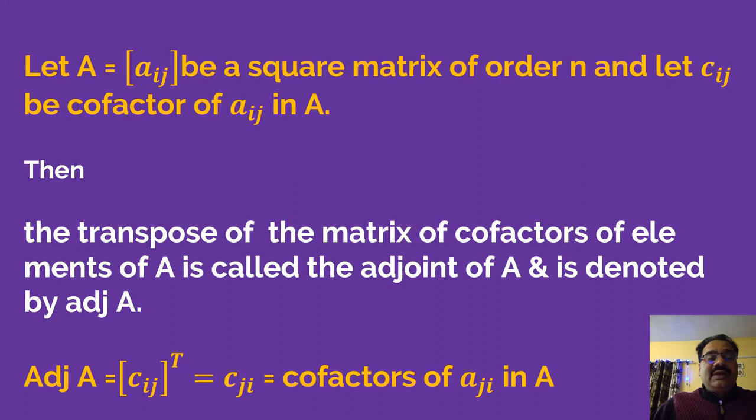The definition is: let A = [Aij] be a square matrix of order n, meaning the order of this matrix is n cross n, and let Cij be the cofactor of Aij in A. Then the transpose of the matrix of cofactors of elements of A is called the adjoint of A and is denoted by adjoint A.